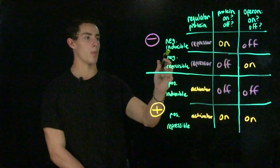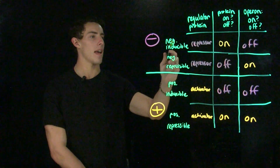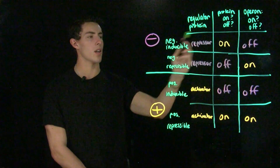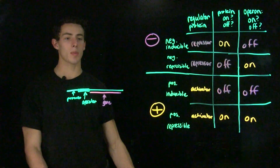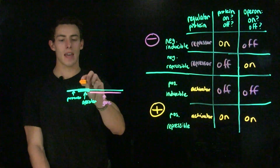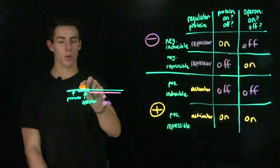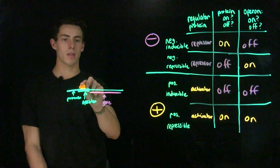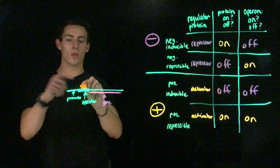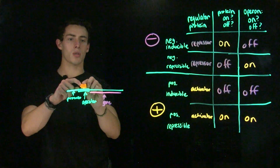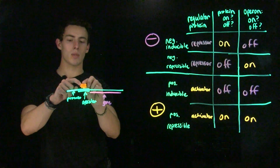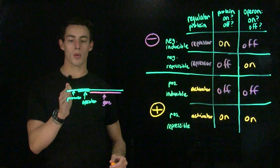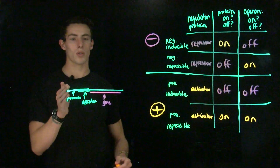If we have a negative inducible operon, that means we have a repressor protein because it's negative, and it also means that our operon is off to start with because it's inducible. Our regulatory protein is going to start on, which means this repressor protein will bind to the regulatory element, or the operator, and will prevent RNA polymerase from binding to the promoter, which is going to inhibit transcription. Transcription will be inhibited until a molecule called an inducer binds to our regulatory protein. When it binds, it's going to change the shape of the protein, changing the DNA binding motif, making it unable to bind to the operator. It will fall off, leaving the promoter open for RNA polymerase to bind, which is going to allow transcription to occur.